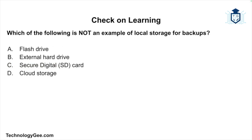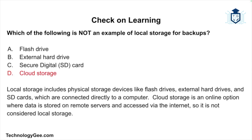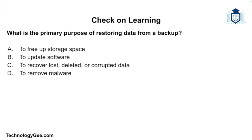Question two: which of the following is not an example of local storage for backups? Is it a flash drive, an external hard drive, an SD card, or cloud storage? The correct answer is cloud storage. Local storage includes physical storage devices like flash drives, external hard drives, and SD cards, which are connected directly to a computer. Cloud storage is an online option where data is stored on remote servers accessed via the internet, so it is not considered local storage.